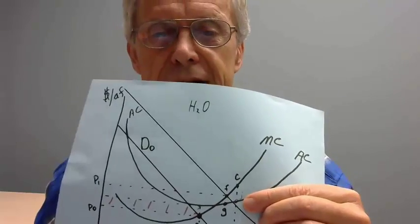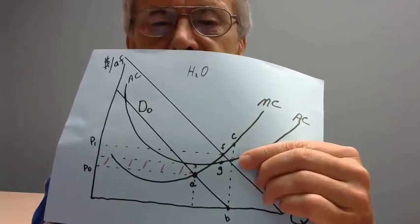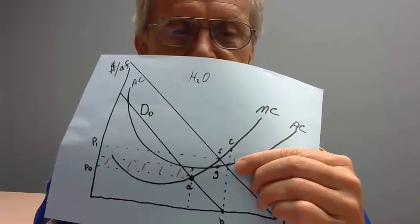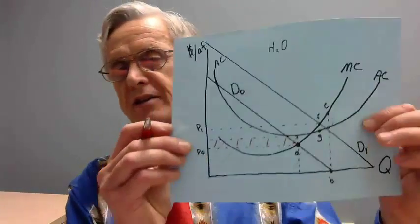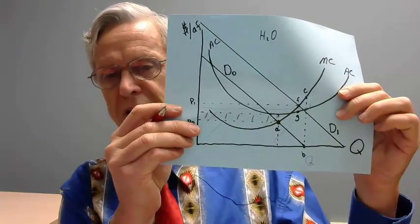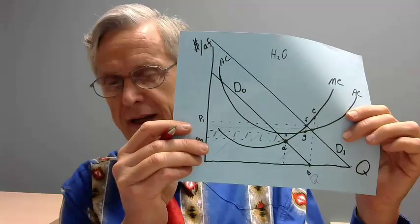Let me draw another dot on here — call that point J. Point J is the average cost with flat fee billing at demand line D0. The area from J-B all the way over to the Y axis — that whole shaded area — represents the total cost of providing quantity Q sub B, which is the amount demanded with a flat fee billing policy.